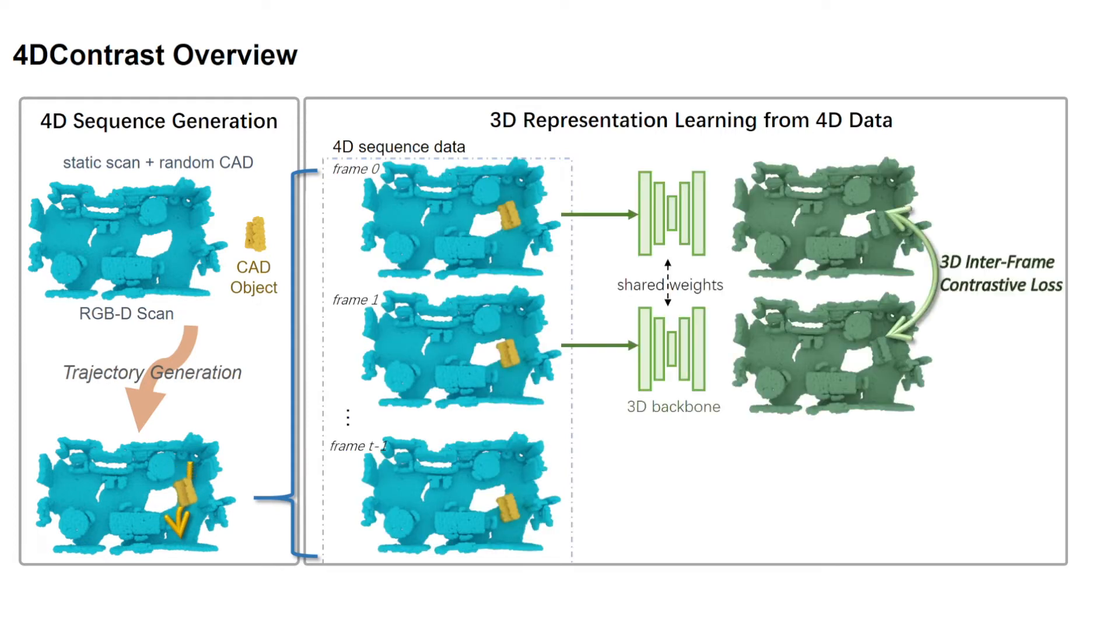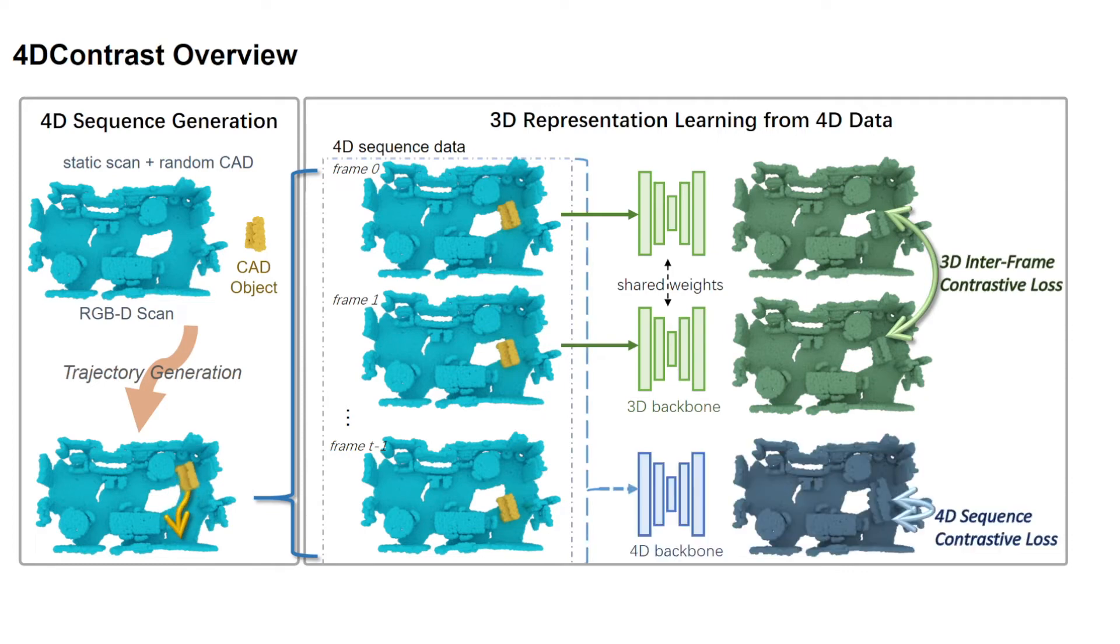We employ contrastive learning under 3D geometric correspondence between individual frames and 4D constraints to anchor the 4D feature learning. Crucially, we use a 3D-4D spatiotemporal contrastive loss to bridge the 3D and 4D representations. This enables imbuing 4D invariants into the learned 3D features.